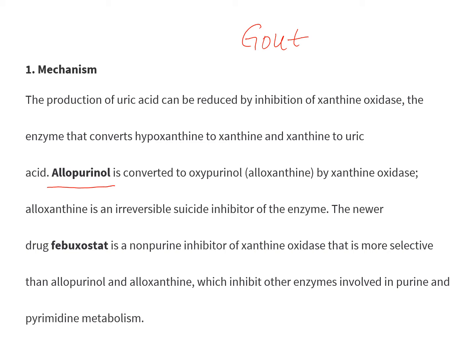Gout basically happens because of excess uric acid crystals being deposited in the joints. The production of uric acid can be reduced by inhibiting the enzyme that is responsible for the formation of uric acid, which is xanthine oxidase.